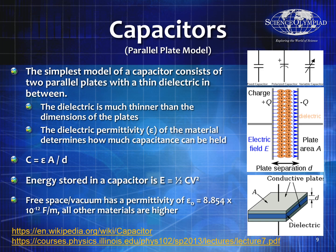Keep in mind that the permittivity of air is about 8.854 times 10 to the minus 12 farads per meter.